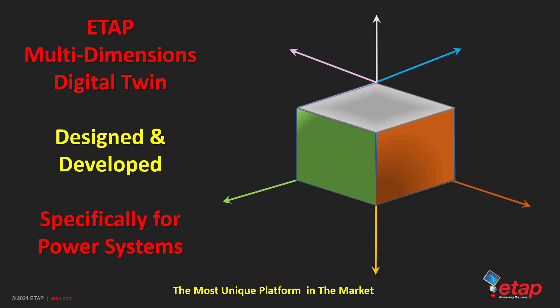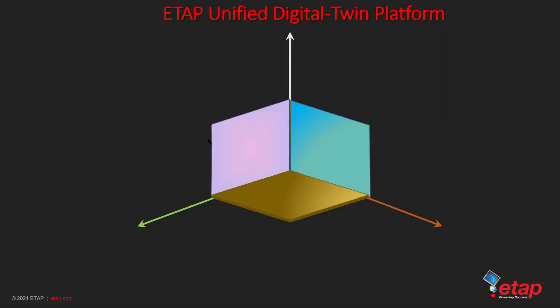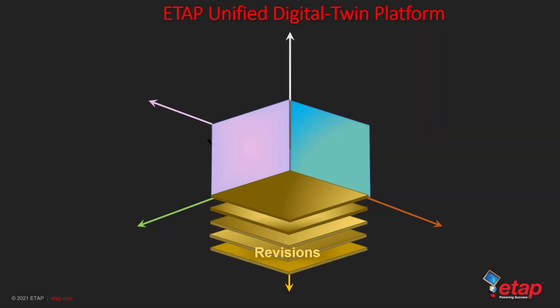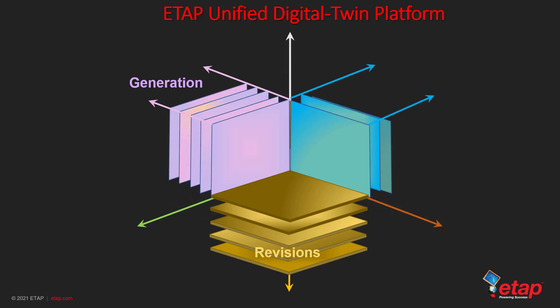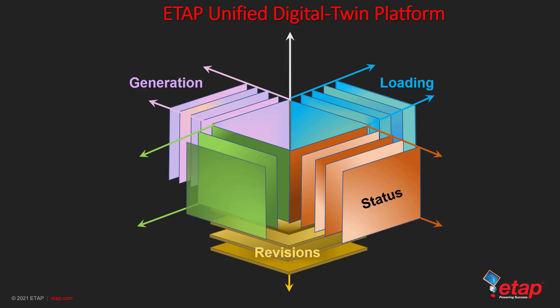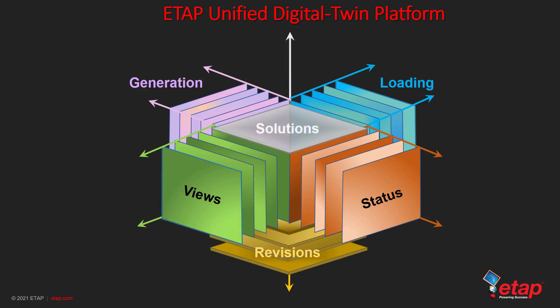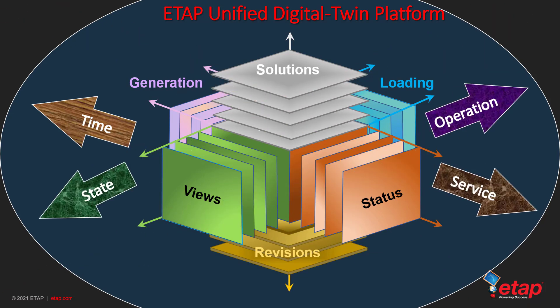I'm showing you six dimensions of this database, and these six dimensions are all orthogonal with each other — meaning they are independent of each other. These cover revision data, generation, loading, configuration and visualization, the solution it provides, and then going with time, operation states and services. This creates the entire system which supports all the functionalities and all the solutions from ETAP.